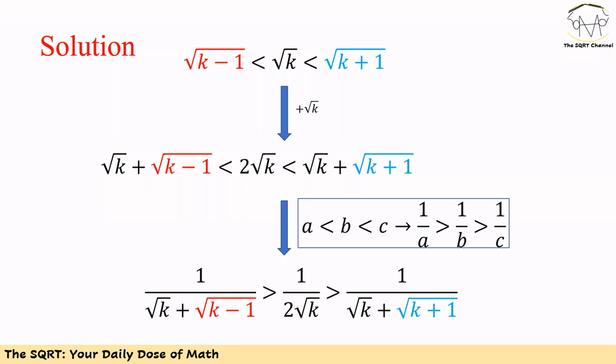Since k is a positive integer, we can say the square root of k is less than square root of k plus 1, and greater than square root of k minus 1. If you add one square root of k to all the terms and then apply the rule that if b is between a and c, then 1 over b is between 1 over c and 1 over a for positive values a, b, and c, then you can see 1 over 2√k is greater than 1 over (√k + √(k+1)) and less than 1 over (√k + √(k-1)).